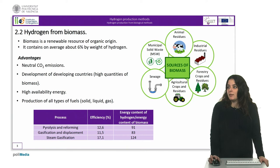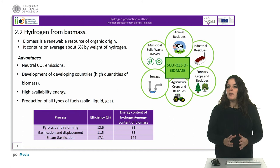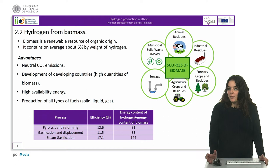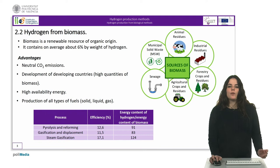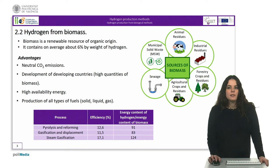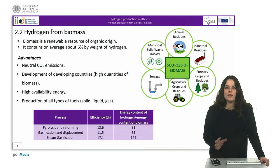Let's start with hydrogen production using biomass as the main source. Biomass is a renewable resource of organic origin and therefore with a hydrogen content to consider. Biomass can be found in different sources which include very heterogeneous materials such as forest and agricultural waste, municipal solid waste, livestock waste, and energy crops among others. Biomass contains on average about 6% by weight of hydrogen, which is equal to 0.672 normal cubic meters of gaseous hydrogen produced from one kilogram of biomass.